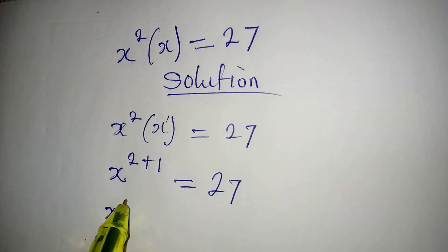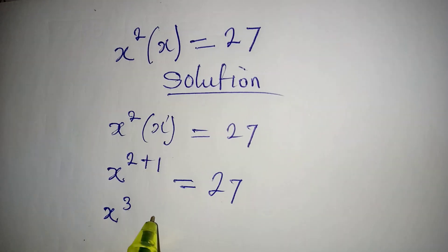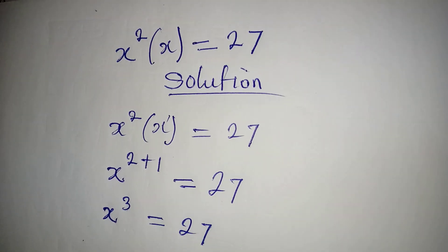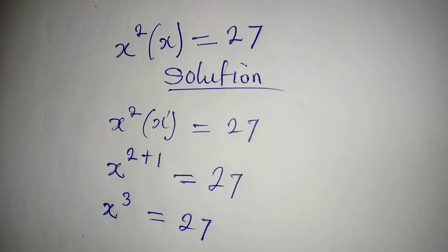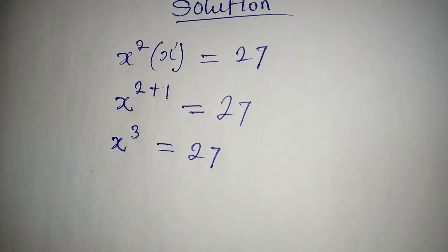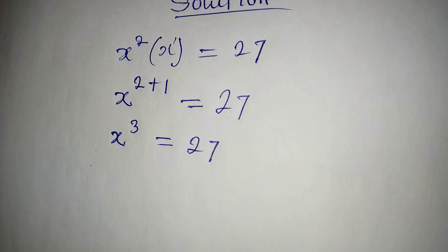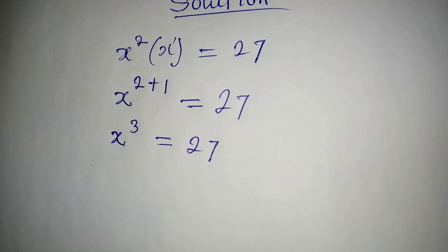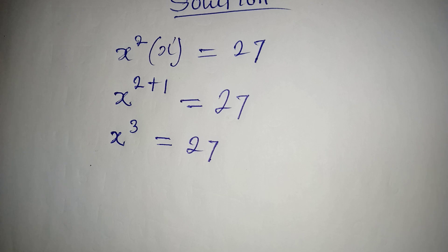Now, x to the power of 3 is equal to 27. The question says solve it completely. If not, what we would have done is take the cube root of both sides and get the value of x. But that will not give us all the solutions, right?